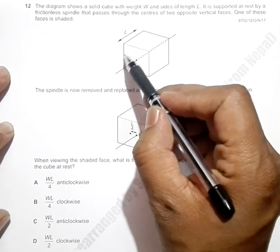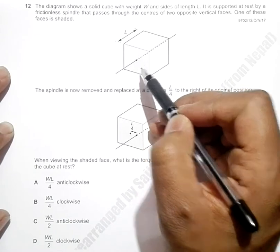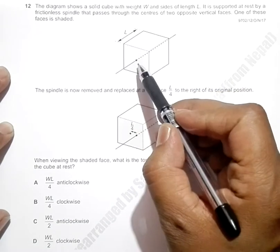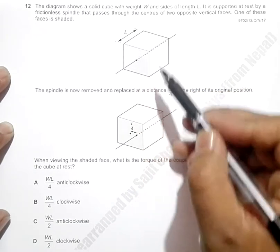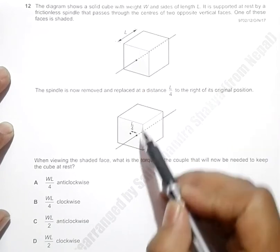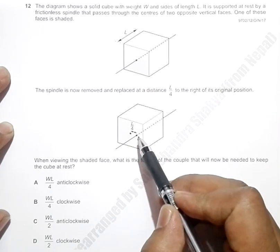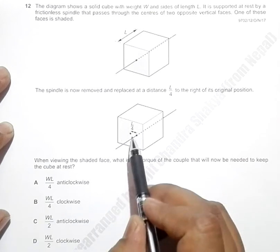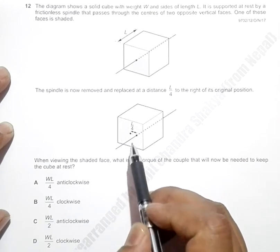is shaded. The spindle is now removed and replaced at a distance equal to L/4 to the right of its original position.